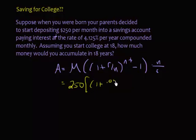The things we know: M is $250, and the interest rate is 0.04125 over 12, raised to the nt which is 12 times 18, minus 1, then times n which is 12 over r which is 0.04125.